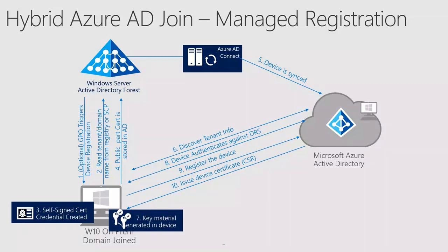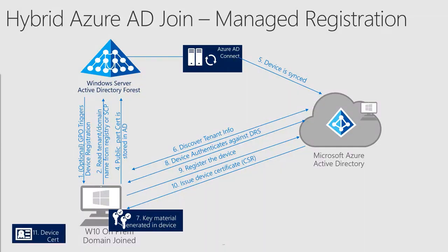What is worth noting here is that in this step, and all the steps below, everything happens in the context of the local system of the workstation itself. This implies that if you have any outbound proxies in your environment or you're filtering at the edge of your network, you will need to allow either computer account authentication or allow-listing for outbound traffic to Azure. The necessary ports and URLs to be allowlisted are documented and you can find them in the description below.